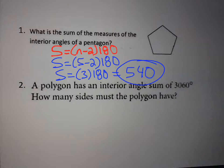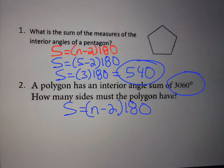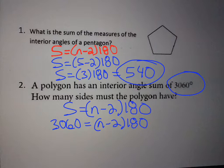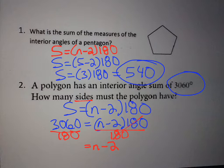A polygon has an interior angle sum of 3060. We use the same formula, but this time we know the sum, so we put 3060 on the left-hand side: 3060 equals (n minus 2) times 180. We divide by 180, so that's n minus 2 equals 17. Then we add 2 to solve for n, so n equals 19. It has 19 sides.